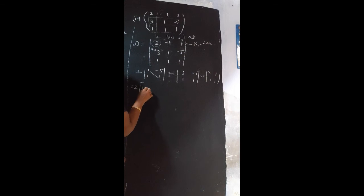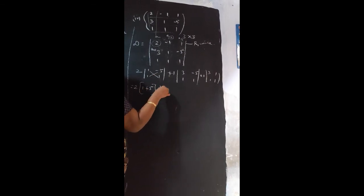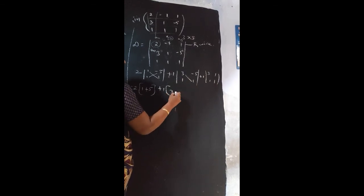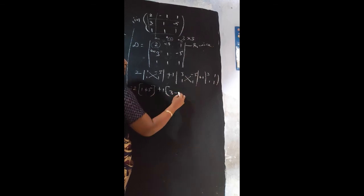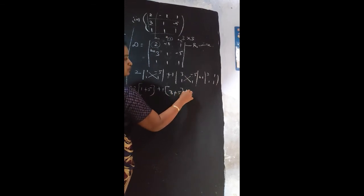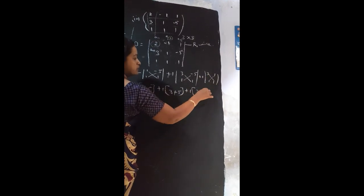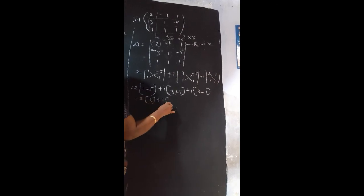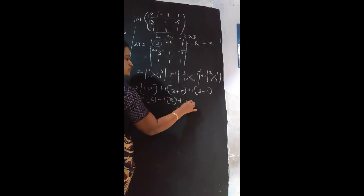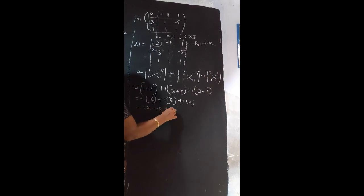So 2 into left diagonal 1, minus minus 5. So it will come plus 5. Plus 1 into left diagonal 3. Formula is minus left, right diagonal. Then minus 5, then plus 5 add. Plus 1 into 3 ones are 3, minus 1 ones are 1. So 2 into 6 plus 1 into 8 plus 1 into 2. 2, 6 are 12, plus 8, plus 2. So the answer is 22.